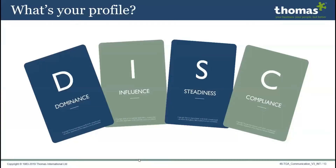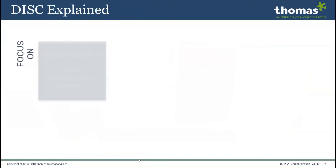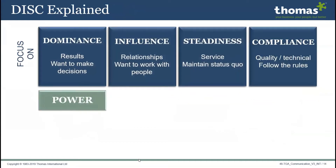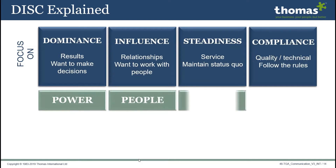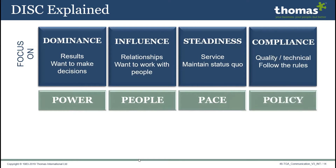As you would have covered in the previous Thomas Insight sessions, through the use of DISC theory from our PPA tool, we can learn a lot about different observable behavioral styles. Just to recap: Dominance is all about power, results, and making decisions. Influence is all about people and building relationships. Steadiness is all about service, maintaining the status quo, and pace. And Compliance is all about policy, procedure, and following the rules.